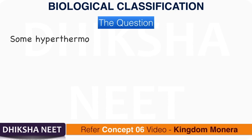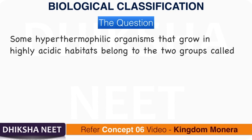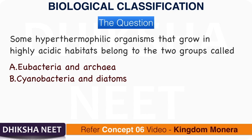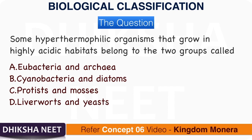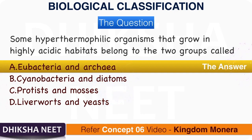Question 10: Some hyperthermophilic organisms that grow in highly acidic habitats belong to the two groups called: A. Eubacteria and Archaea. B. Cyanobacteria and diatoms. C. Protists and mosses. D. Liverworts and yeasts. The answer is option A, Eubacteria and Archaea.